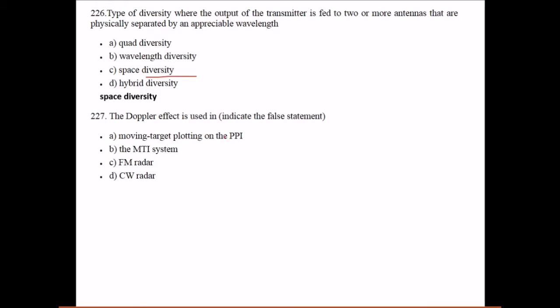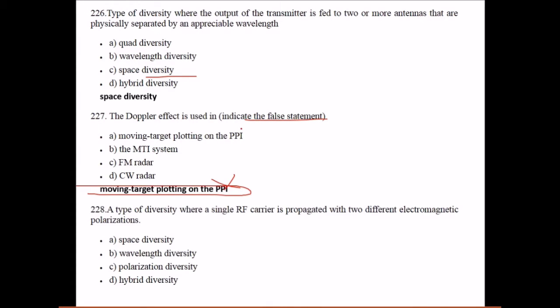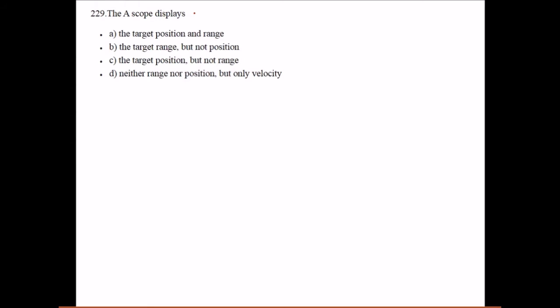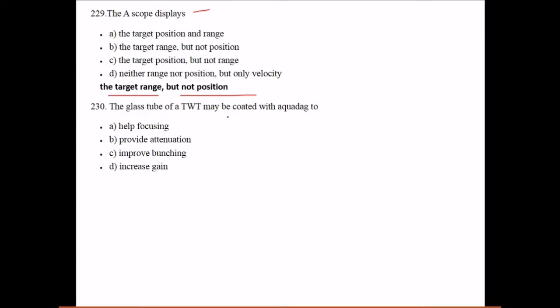The Doppler effect is used in - we have to indicate the false statement - moving target plotting on a PPI. The type of diversity where a single RF carrier is propagated with two different electromagnetic polarizations is polarization diversity. A-scope displays a target range but not position.